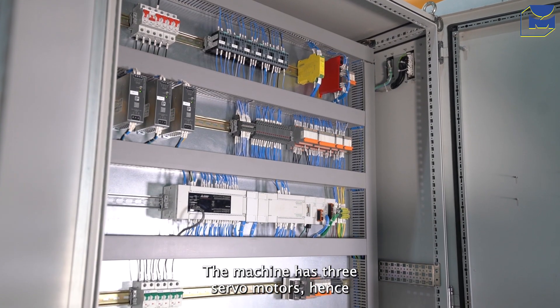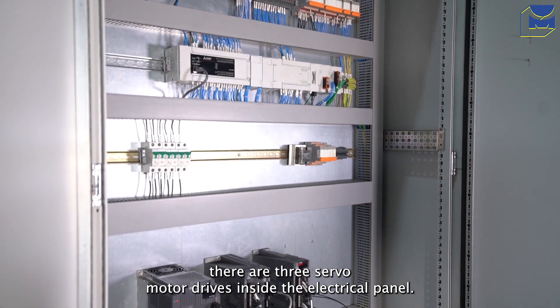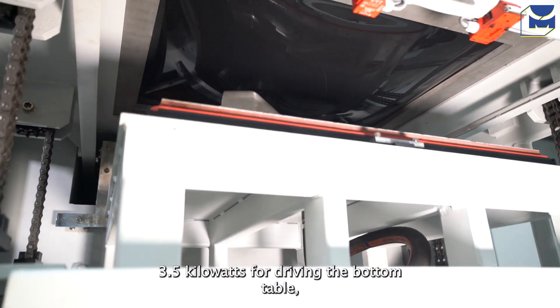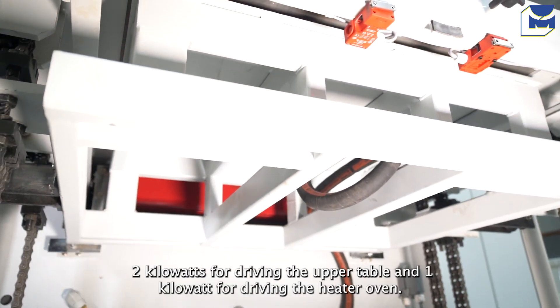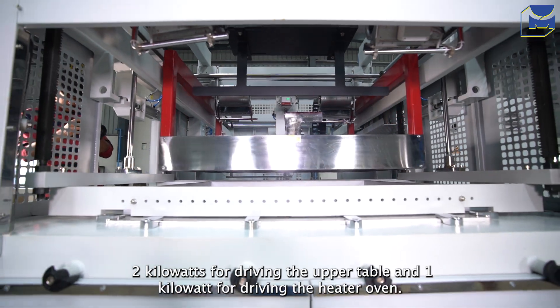The machine has three servo motors. Hence, there are three servo motor drives inside the electrical panel: 3.5 kilowatts for driving the bottom table, 2 kilowatts for driving the upper table, and 1 kilowatt for driving the heater oven.